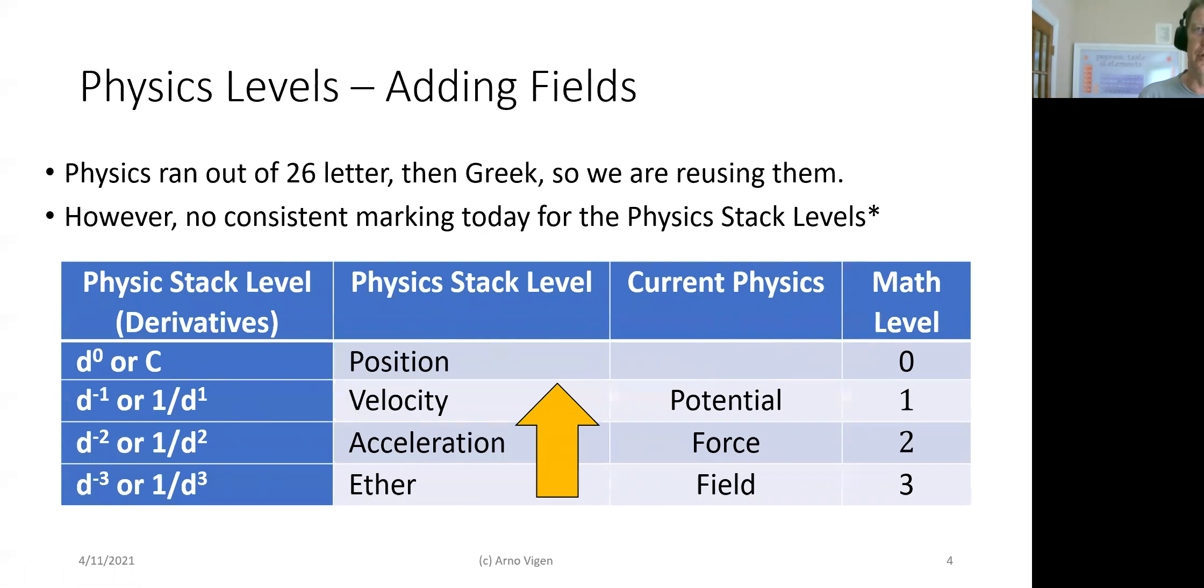Obviously there's challenges because physics had 26 letters and then it had Greek, and so we're using them. However, there's no consistent marking for what about these stack levels. Because if you do an equation and you're at one level or the other, you can see that you're at different exponents.